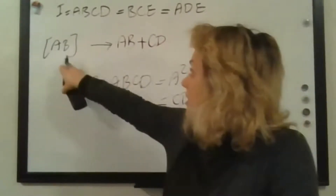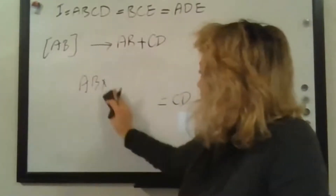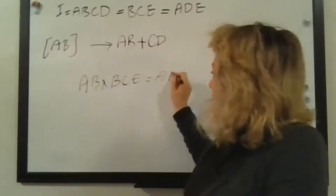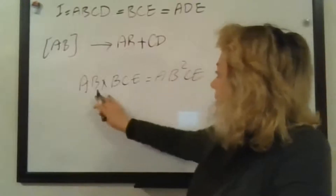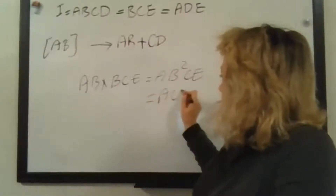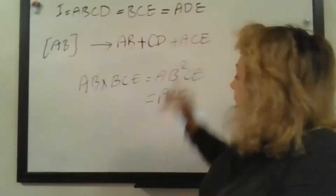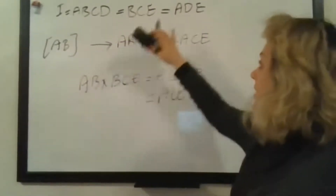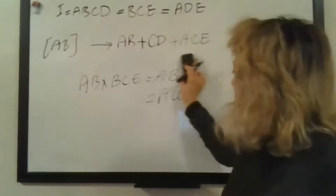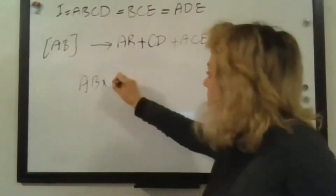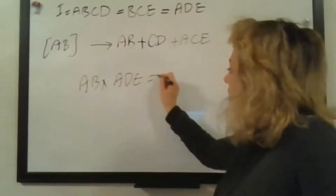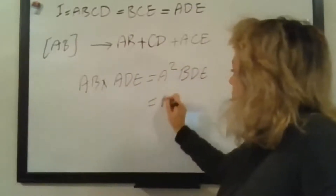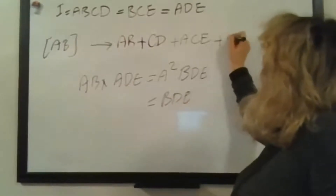The second one: multiply AB by BCE. That gives AB times BCE, which is A, B-squared, CE — equal to ACE. Then multiply AB by ADE, which gives A-squared BDE, equal to BDE. So the confounding pattern for AB is: AB + CD + ACE + BDE.